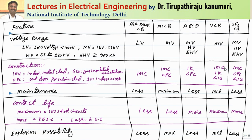Let us summarize the features of these circuit breakers. Voltage range: LV means low voltage up to 1000 V, MV means medium voltage up to 33 kV, HV means up to 220 kV, and EHV is greater than or equal to 400 kV. For construction types: IMC stands for indoor metal clad, OPC stands for outdoor porcelain clad, GIS stands for gas insulated substation, and IK stands for indoor kiosk. Air brake circuit breakers are used for low voltage applications, minimum oil circuit breakers for medium voltage up to 33 kV, and air blast for medium, high, and extra high voltage.